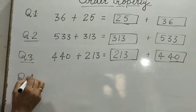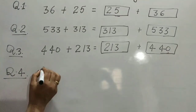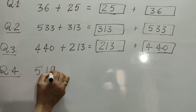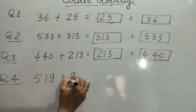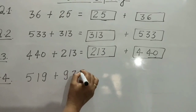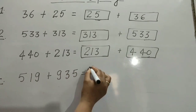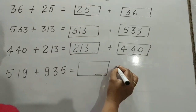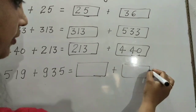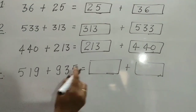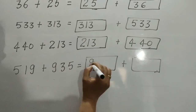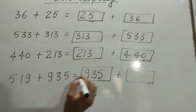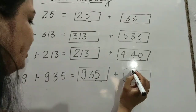Question number 4: 519 plus 935. We change the order of numbers: 935 plus 519.